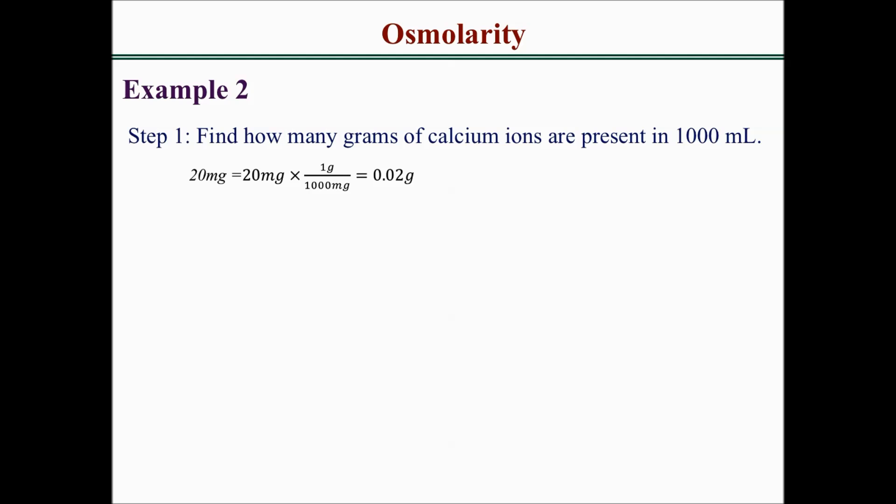Our first step is to find how many grams of calcium ions are present in 1000 mL. The first thing we need to do is convert the 20 mg to grams. We have to multiply 20 mg times 1 g over 1000 mg. We'll get 0.02 g. So 20 mg is equal to 0.02 g.